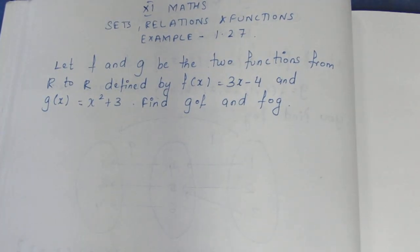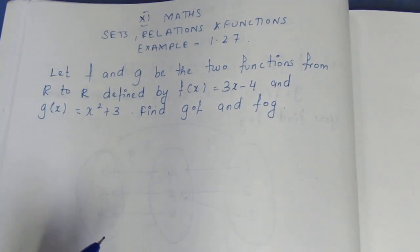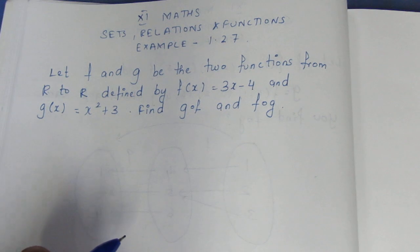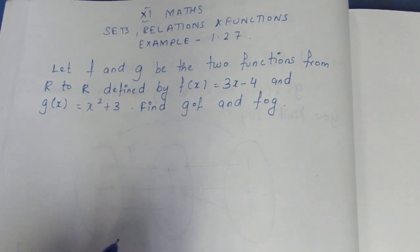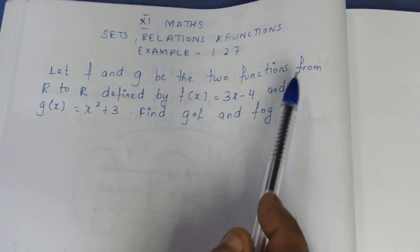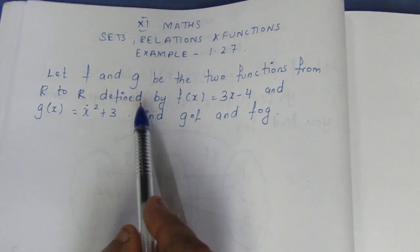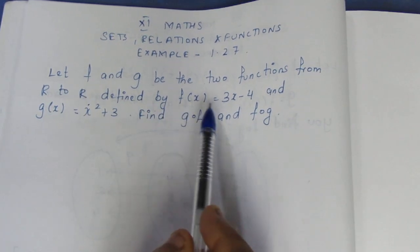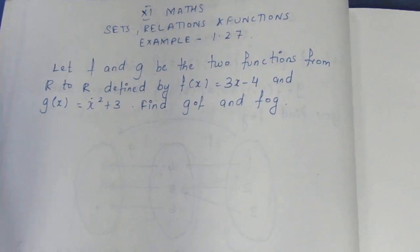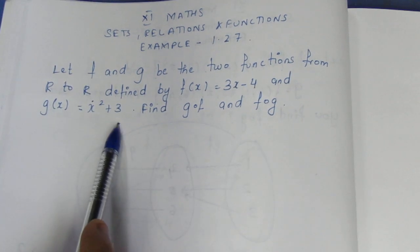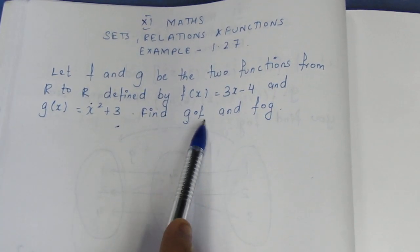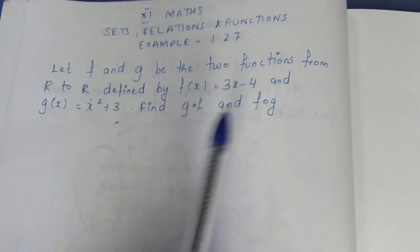Hello viewers, I am IT. In Class XI, Max sets relations and functions, example 1.27. Let f and g be two functions from R to R defined by f of x is equal to 3x minus 4 and g of x is equal to x square plus 3. Find g composite f and f composite g.